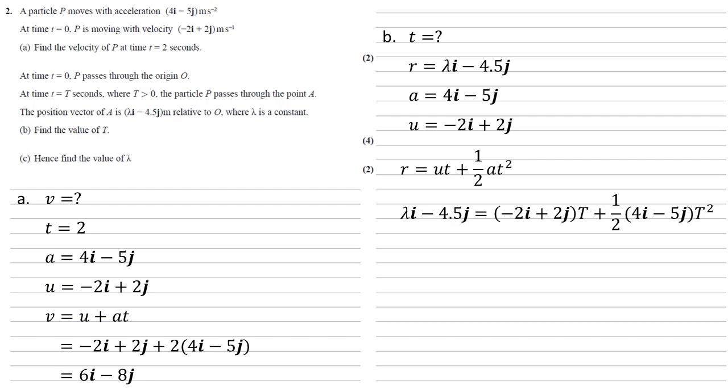We need to find the value of t. Now there are two unknowns in this formula. We've got the lambda and we've got t. But the lambda only appears with the i part of our equation. So if we set the j's equal to each other, we've got minus 4.5 on the left. On the right, we've got 2t minus 5 over 2t squared.